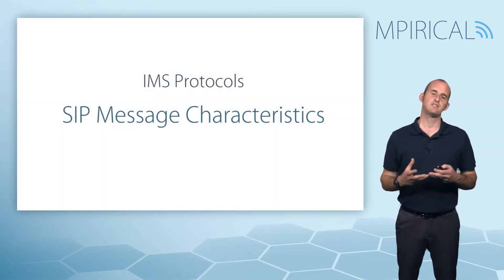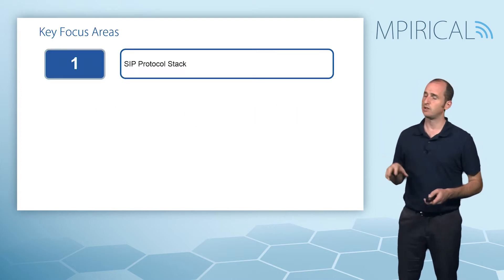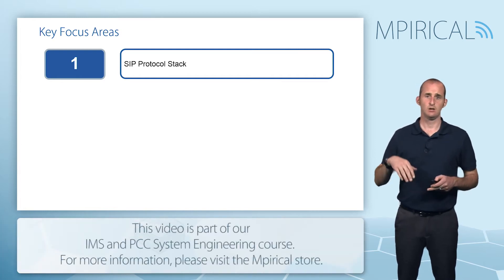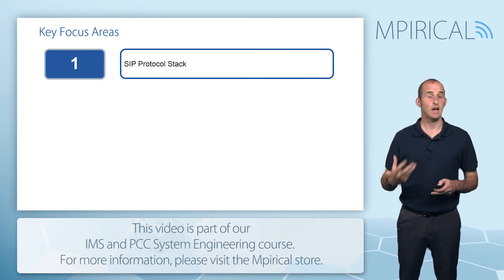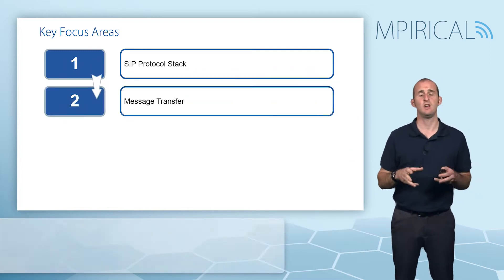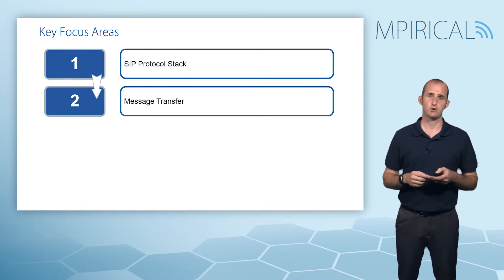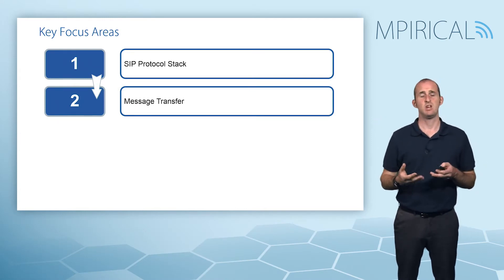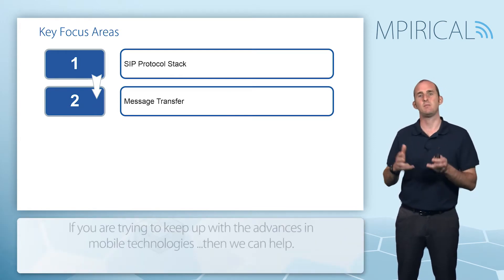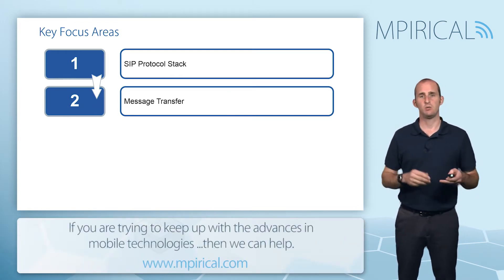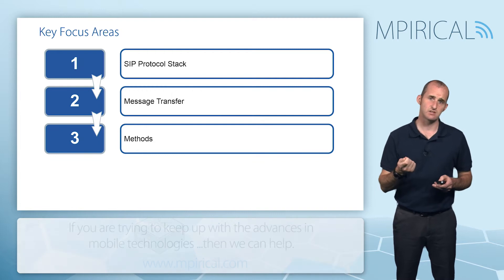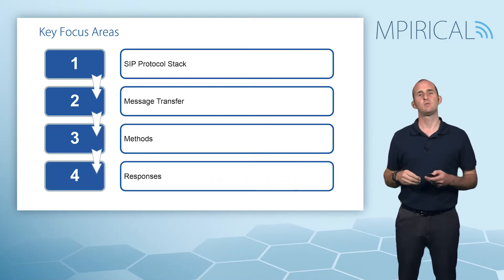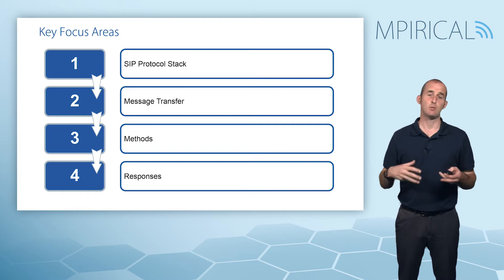With respect to SIP message characteristics, there are four main areas we're going to discuss in this video. We'll start with a look at the general SIP protocol stack, looking at what sits as a payload of SIP and also the transport protocols which can carry SIP. We'll also consider the end-to-end message transfer process, the composition of a SIP message, how SIP proxies can be used to get that message from one point in the network to another, the key commands associated with SIP — termed methods — and the potential responses we can get back from a particular request.